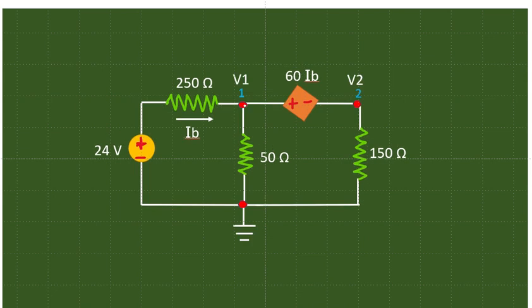Now we can mark the nodes. This node is marked as node 1 and this is marked as node 2. This is our reference node, that is the ground node. The potential at this first node can be named as V1 and this can be named as V2.